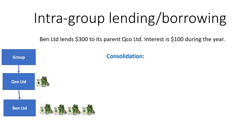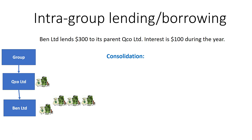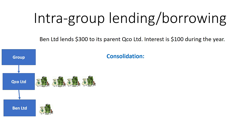Next: intragroup lending and borrowing. Ben Limited lends $300 to its parent QCO Limited. Ben Limited has $400, QCO Limited has $100, so the group in its entirety has $500 worth of cash. When Ben Limited lends $300 to QCO Limited, Ben now has $100, QCO has $400, the group still has $500. There's been no net increase or decrease on the group's resources, so we need to eliminate any transactions associated with this, as it's all internal to the group.